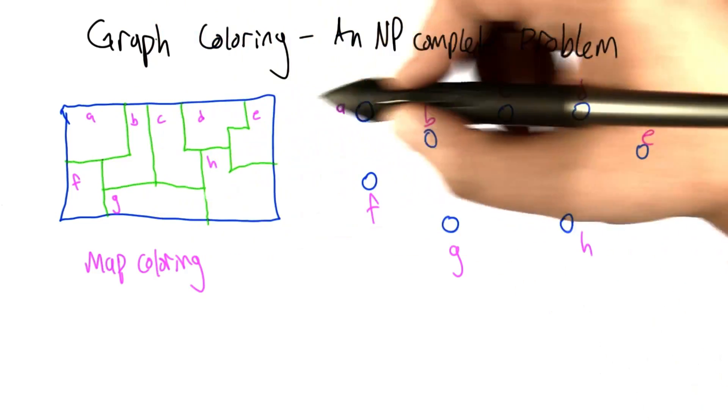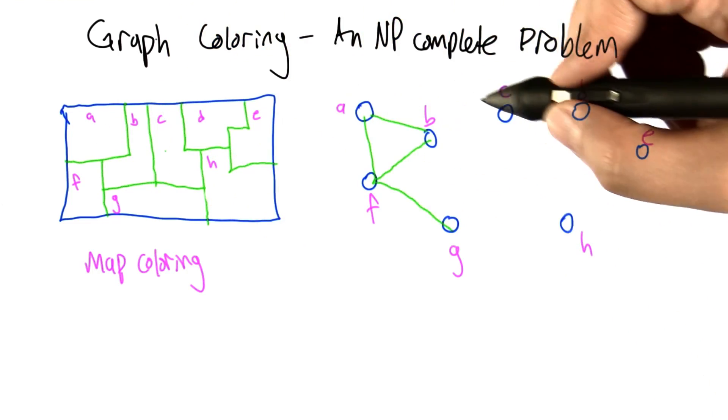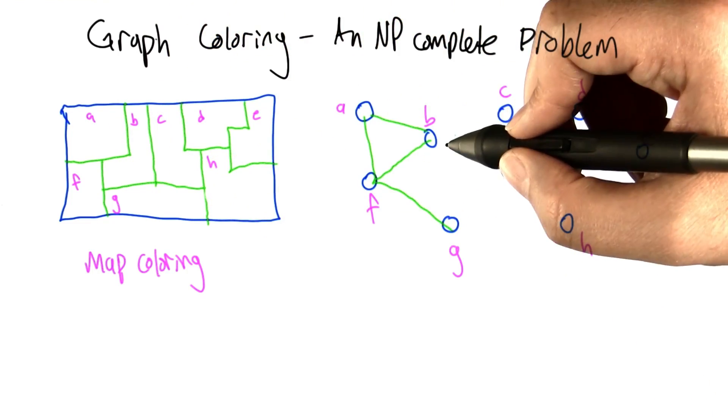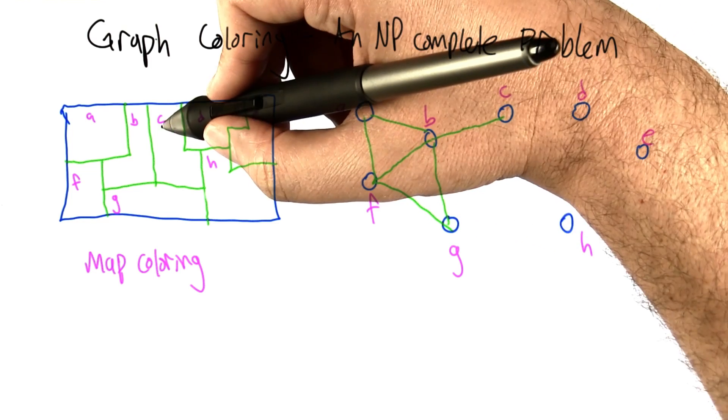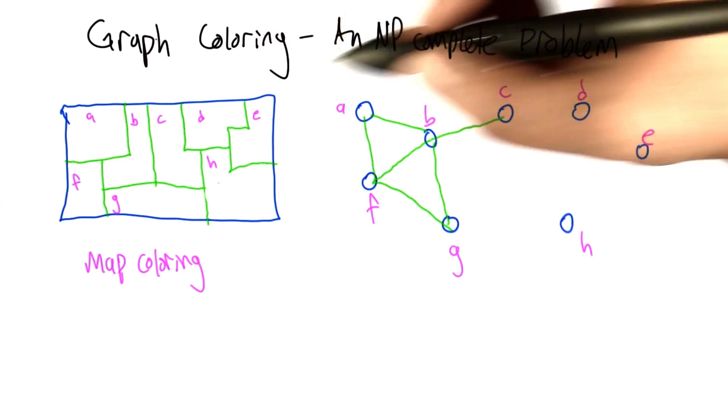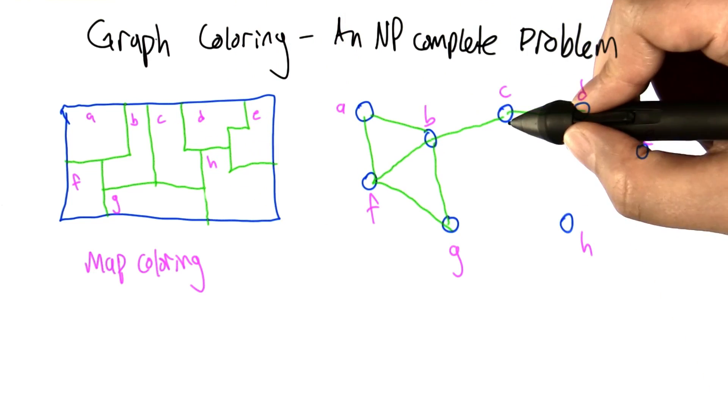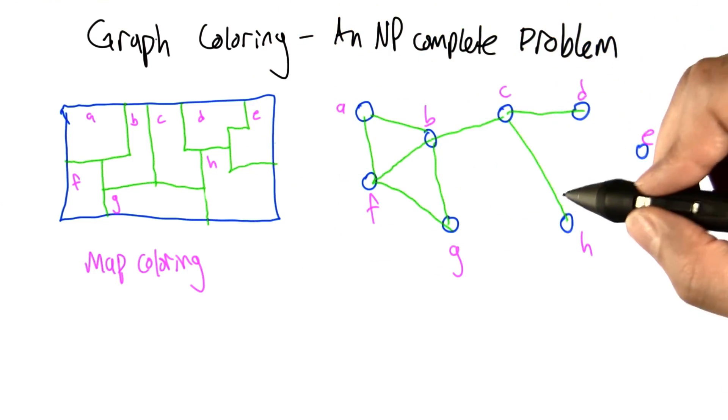A shares borders with B and F. F shares borders with G, B, and A. B shares borders with A and F that we have already and G and C. C shares borders with D and H. H shares borders with G and E and D.